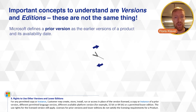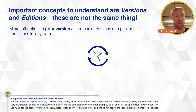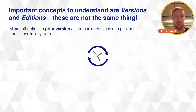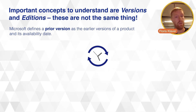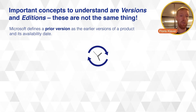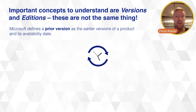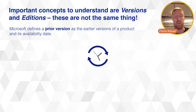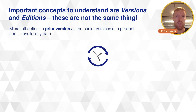A version is what it says — it's the date and time of a product release. So Windows Server, for instance, has 2012, 2012 R2, 2016, and 2019. Any new release of a product is called a version in the Microsoft licensing world.